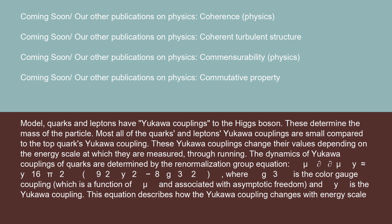μ ∂y/∂μ ≈ y/(16π²) × [(9/2)y² - 8g_3²], where g_3 is the color gauge coupling, which is a function of μ and associated with asymptotic freedom, and y is the Yukawa coupling. This equation describes how the Yukawa coupling changes with energy scale μ.